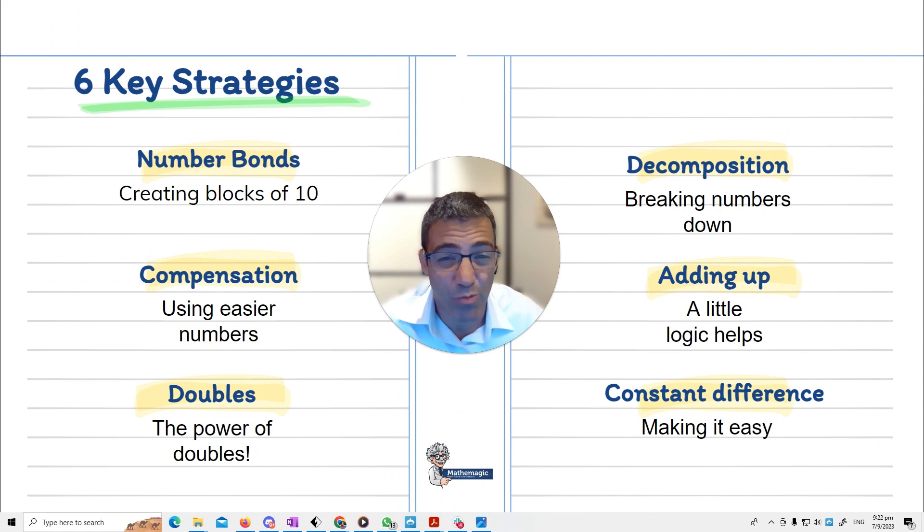So we hope this helps you to work with your child on super fun, useful and effective counting strategies. Number bonds, compensation strategy, doubling numbers, doubling big numbers, decomposing numbers, breaking them down, adding up, like seeing what you need to add up to to get to the next number. And the constant difference where you find that adding the same quantity to both numbers will make your operation a lot easier. Number bonds, absolutely essential. Make sure that you get those down. Thank you so much for watching. Let's see you on the next one. Bye-bye.